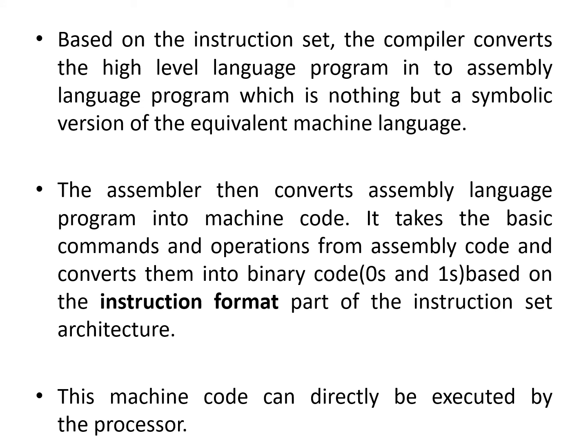Based on the instruction set, the compiler converts the high-level language program into an assembly-level language program, which is a symbolic version of the equivalent machine language. Then the assembler converts the assembly language program to machine code — it takes the basic commands and operations from the assembly code and converts them into binary codes, that is zeros and ones, based on the instruction format part of the instruction set architecture discussed previously. This machine code can then be directly executed by the processor.